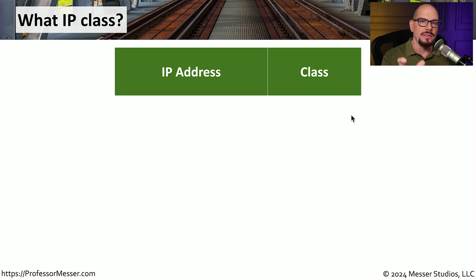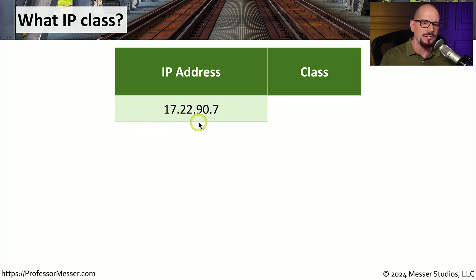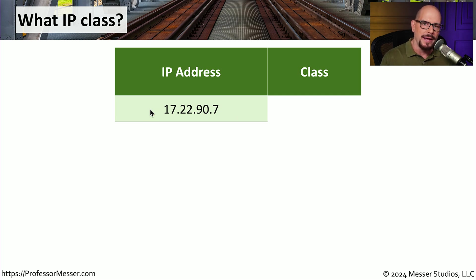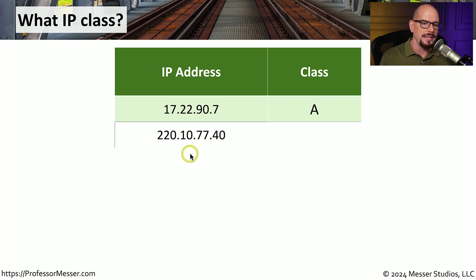Based on that chart and those ranges, let's determine what class a particular IP address belongs to. Starting with 17.22.90.7 — to determine the class, we look at the first octet, which is 17. Referring back to the chart, 17 is in a class A address. Next, the IP address 220.10.77.40 — the first octet is 220, and 220 falls in the class C range.